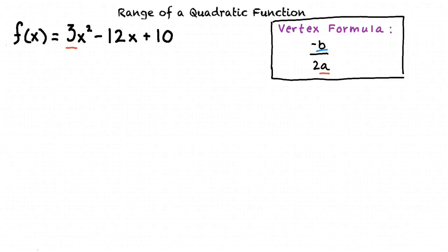b is the constant in front of the second term, so in this case, negative 12. So if we substitute 3 for a and negative 12 for b in the vertex formula, we get a result of 2.